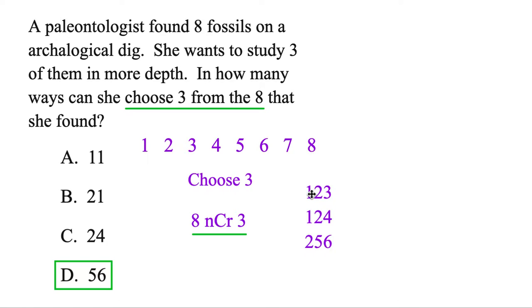And just as an example, you could choose number one, two, and three, one, two, four, two, five, and six, and keep going. And all of the ways that you could choose those would add up to fifty-six.